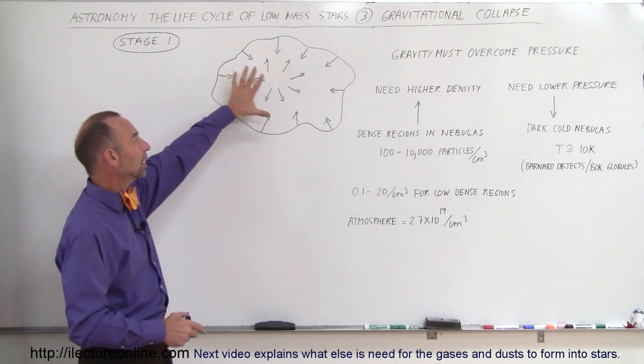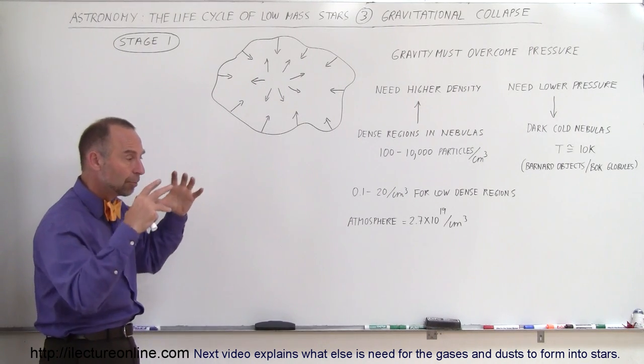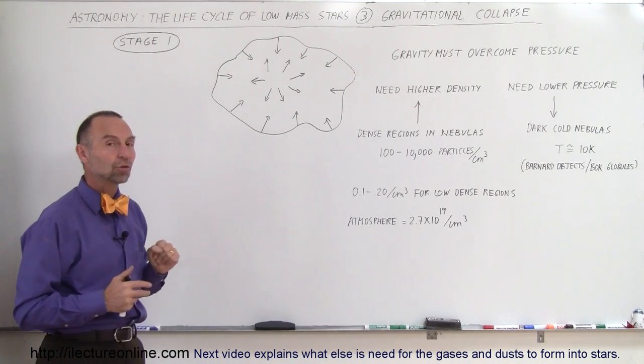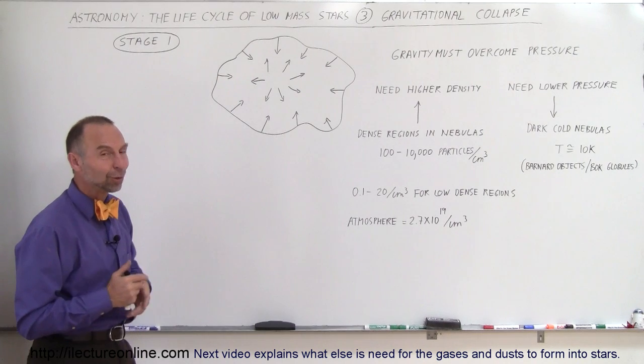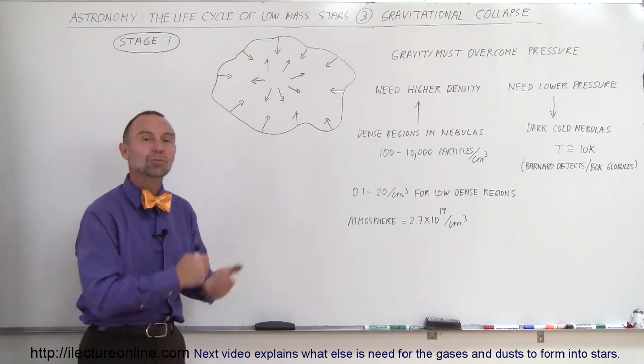So we call this Stage 1. Stage 1 is the place where we have a cloud of dust and gas that's ready to collapse, ready for gravity to take over, push together and turn that into a star. How that happens? Well, let's go look at our next video to see what happens during Stage 2 and how this process can actually get into motion.